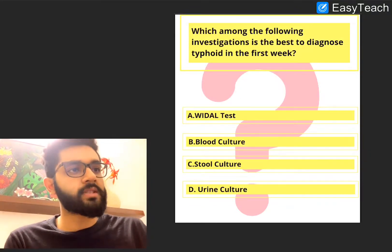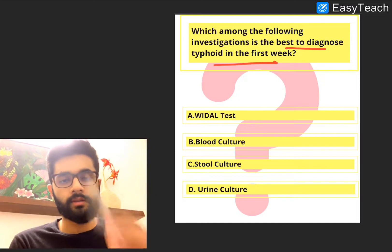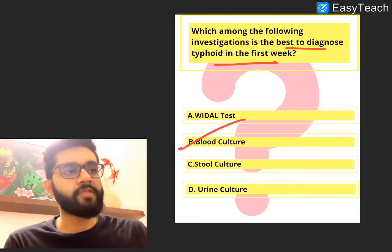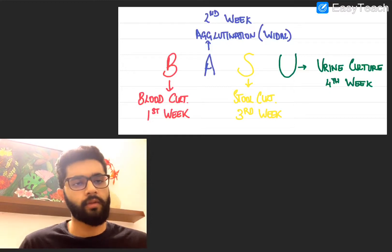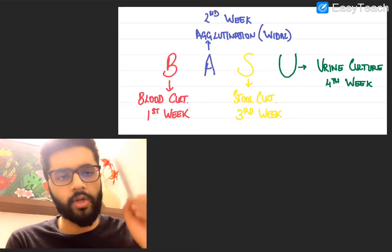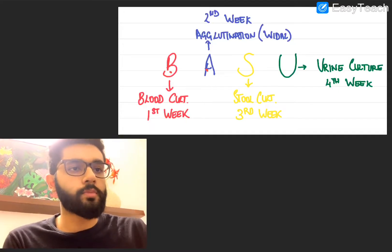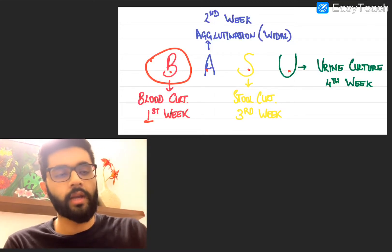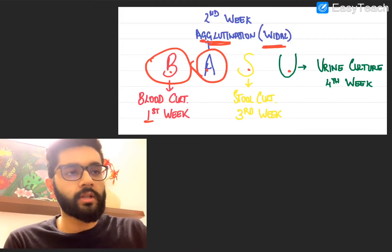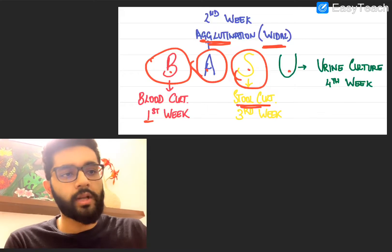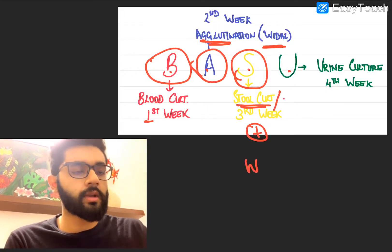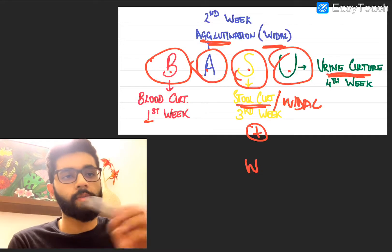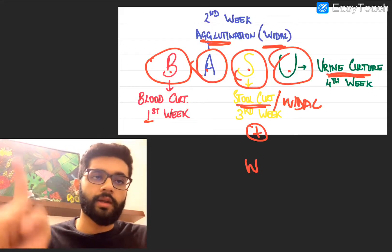Last question: which investigation is best to diagnose typhoid in the first week? The answer is B, blood culture. The mnemonic is BASU — B-A-S-U. In the first week, B for blood: blood culture is the best investigation. In the second week, A for agglutination — the Widal test is the best. Third week, S for stool culture — stool culture or Widal have equal efficacy. In the fourth week, U for urine: urine culture can also be positive. So in the first week, blood culture is the best and only investigation that will work.